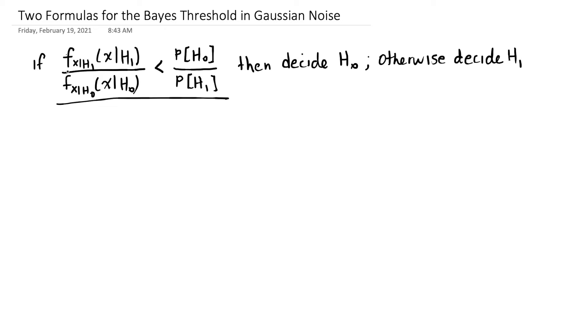If you recall, we ended up with this ratio of the conditional probabilities of x given h1 and x given h0 on one side, a less than sign, and a ratio of probabilities on the right-hand side. And if this was true, then we're going to decide h0, and if it wasn't, we're going to decide h1.